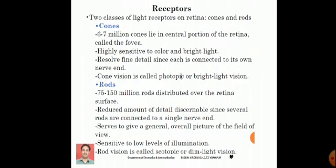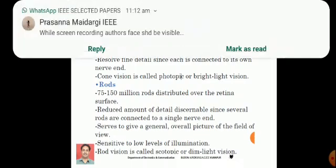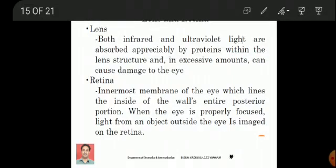Remember, rods form the overall view of the image and do not provide finer details. Retina is the innermost membrane of the eye which lines the wall's entire posterior portion. When the eye is properly focused, light from an object outside the eye is imaged on the retina.